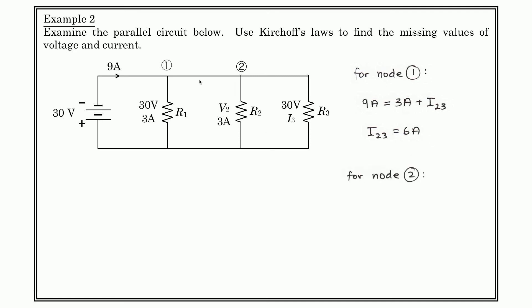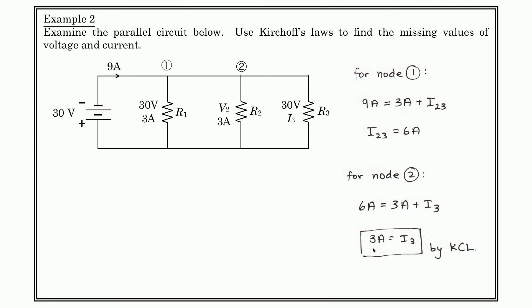Now, 6 amps of current leave node 1 on their way to node 2. We see that 3 amps is flowing through one branch, so the amount of current that flows through I3 is 3 amps — by Kirchhoff's Current Law. It happens to be a coincidence of this problem that I1, I2, and I3 are all 3 amps; that will not always be the case. Current will split in different amounts depending on the different resistors.